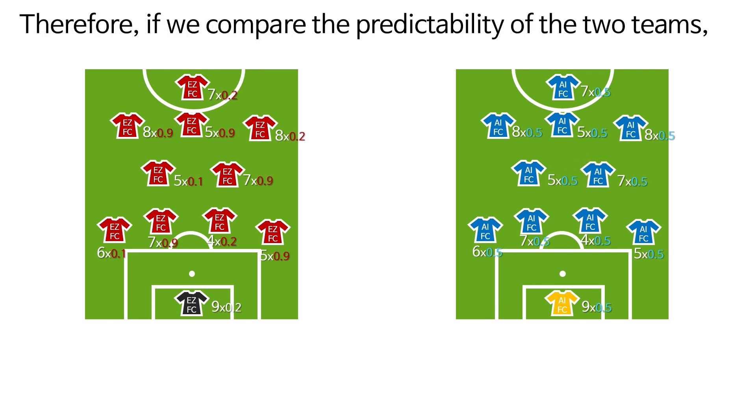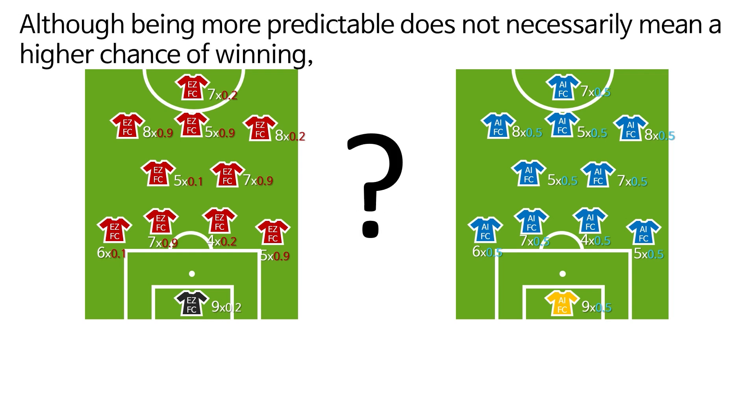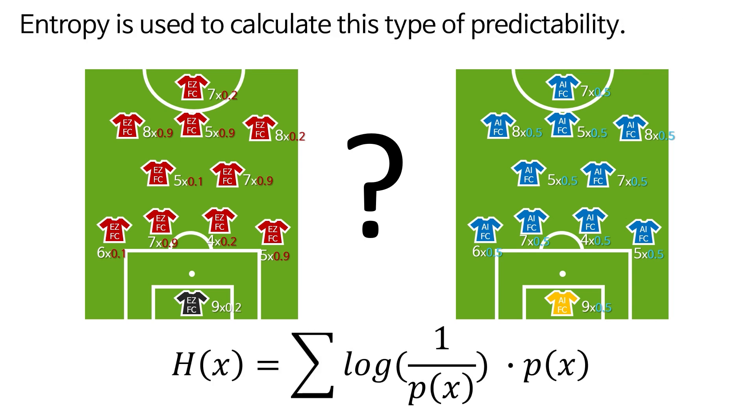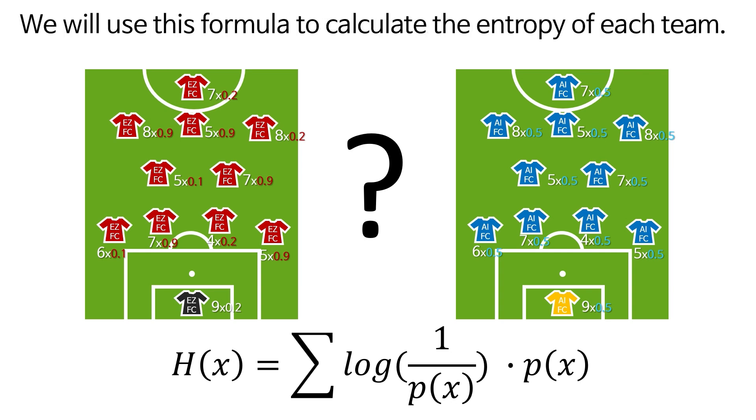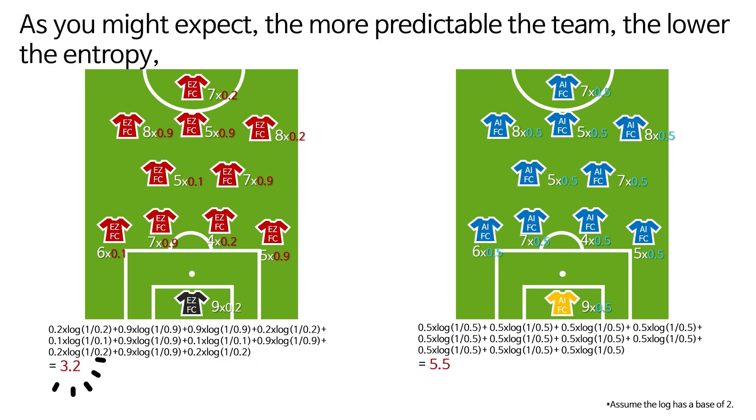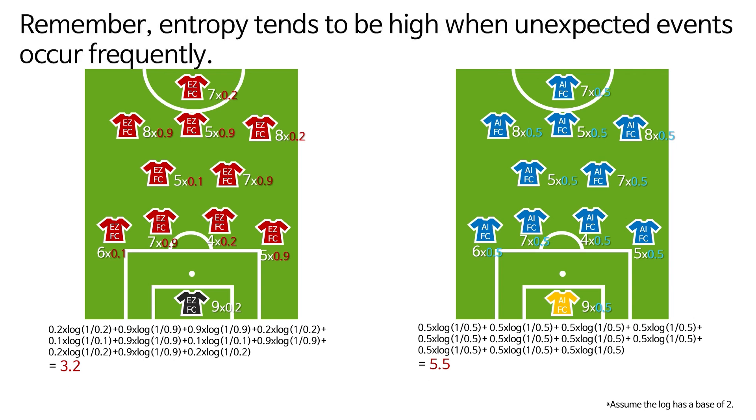Therefore, if we compare the predictability of the two teams, Team Easy FC is definitely more predictable than Team AI FC. Although being more predictable does not necessarily mean a higher chance of winning, it can be an important data point in determining the outcome of the match. Entropy is used to calculate this type of predictability. We will use this formula to calculate the entropy of each team. As you might expect, the more predictable the team, the lower the entropy, and the less predictable the team, the higher the entropy. Remember, entropy tends to be high when unexpected events occur frequently.